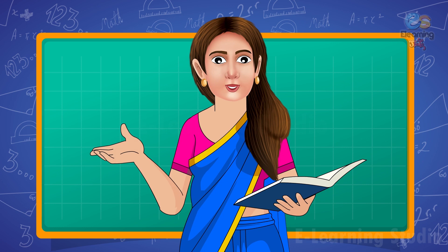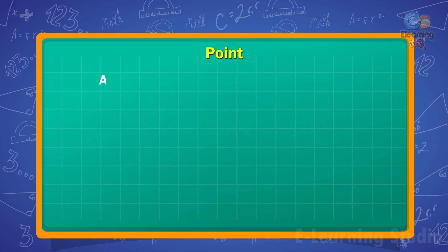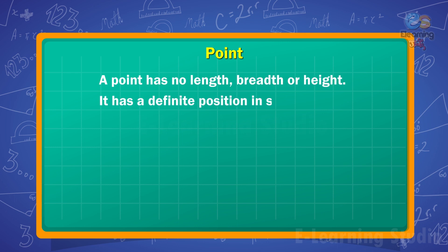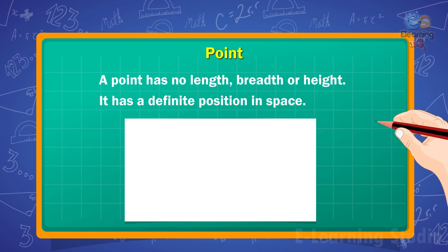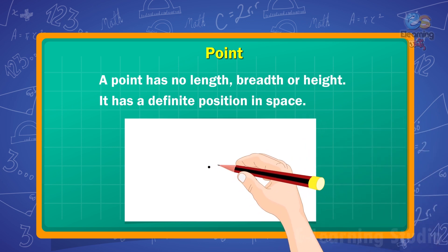Children, let's discuss about point. A point has no length, breadth or height. It has a definite position in space. A point is drawn on the paper with a sharp pencil.